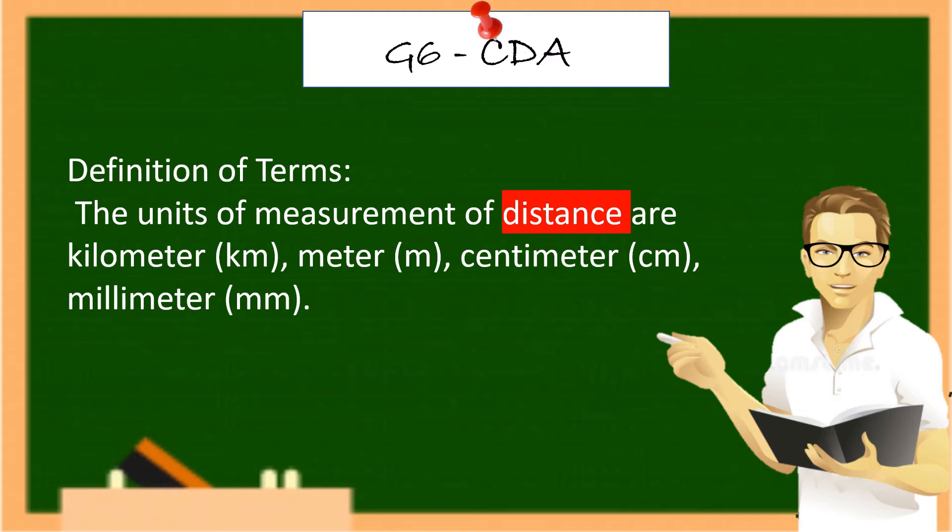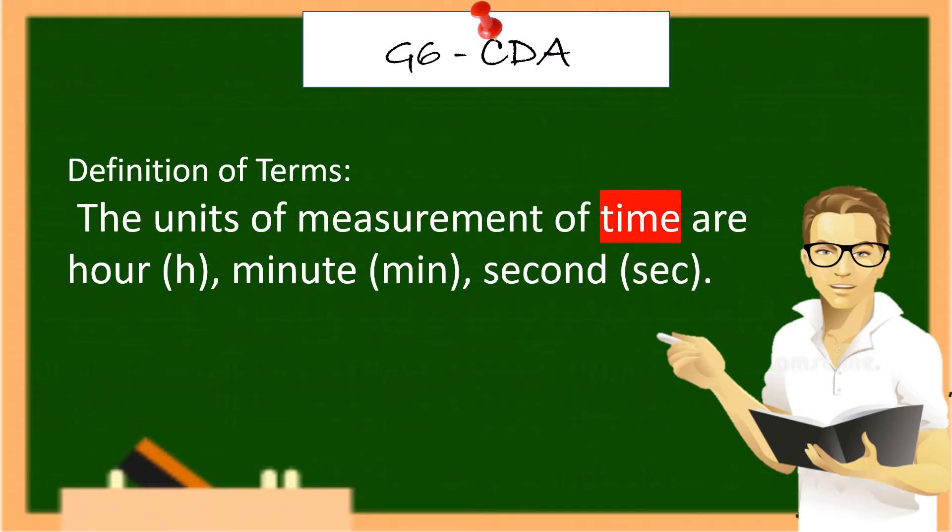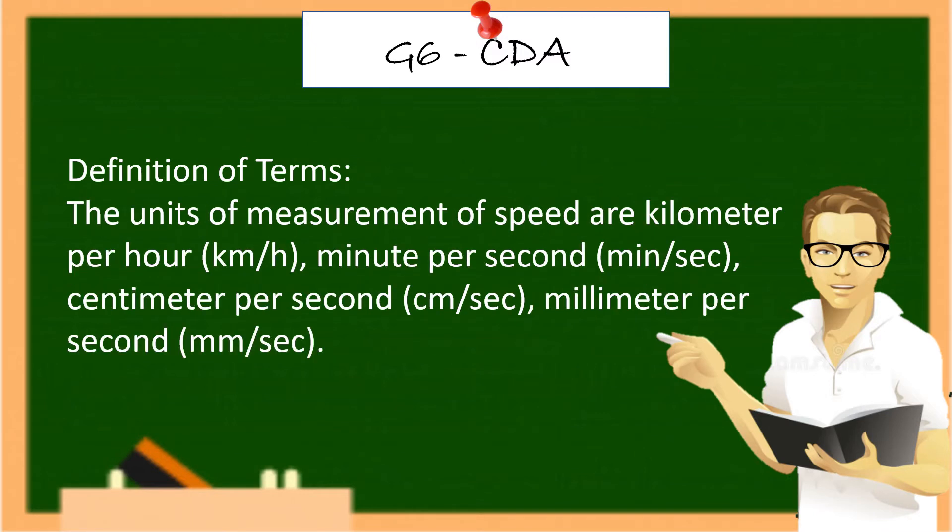So now, let us define some terms. The units of measurements of distance are kilometer (km), meter (m), centimeter (cm), and millimeter (mm). The units of measurement of time are hour, minute, second. The units of measurement of speed are kilometer per hour, meter per second, centimeter per second, millimeter per second.